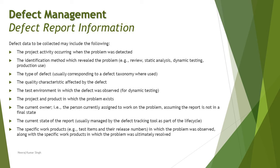The project and product in which the problem exists should be recorded, as there might be multiple releases being handled. The current owner is also important: as the defect travels through its life cycle, it may have multiple owners at different stages — initially the tester, then possibly the test manager or test analyst during review, and then the developer once assigned. As the defect travels through the life cycle, ownership changes at different points in time.